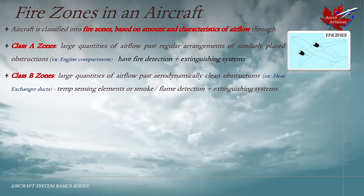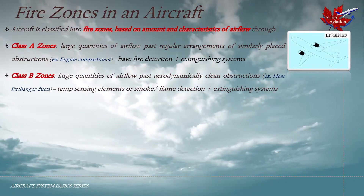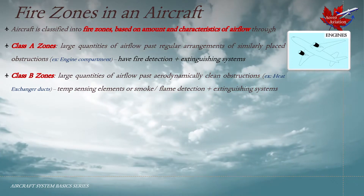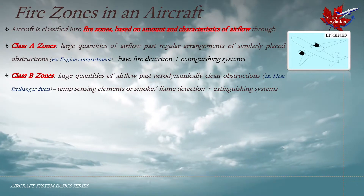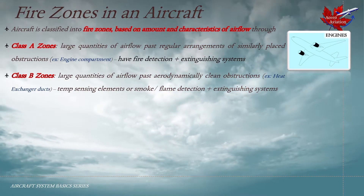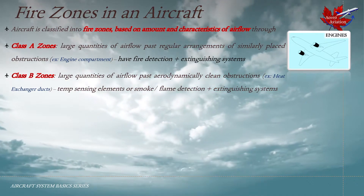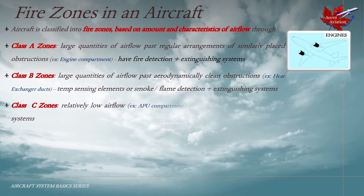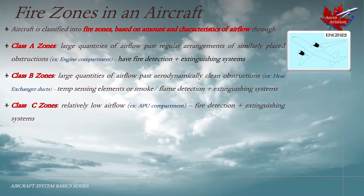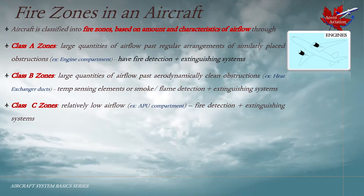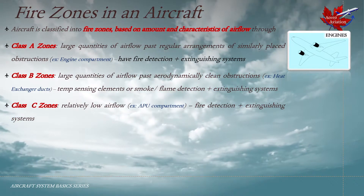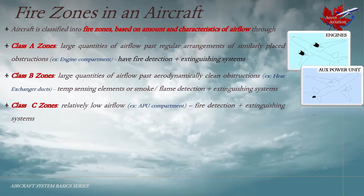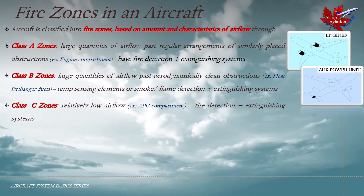Class B zones have large quantities of air flow past aerodynamically clean obstructions, such as heat exchanger ducts within the aircraft. These zones have temperature sensing elements and fire extinguishing systems installed so as to control a fire should one occur. Class C zones have relatively low air flow compared to the first two, such as the APU compartment or the cargo compartment of the aircraft. Class C zones have fire detection and extinguishing agents present.